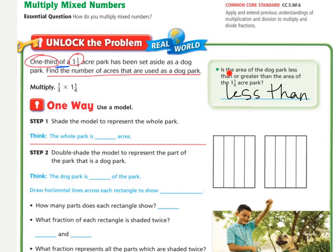Next, is the area of the park less than or greater than the area of the one-and-a-quarter acre park? Well, we're finding a part of the acre park, so the dog park is going to be smaller. It's going to be less than.